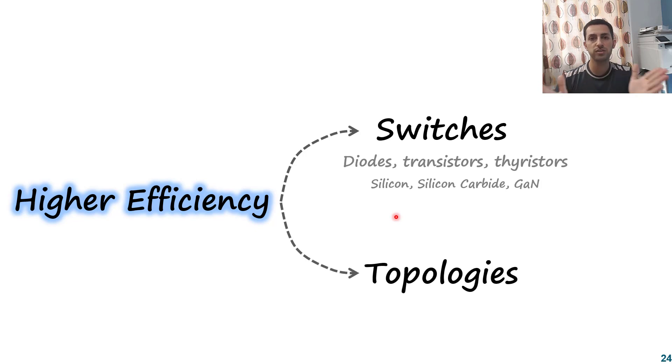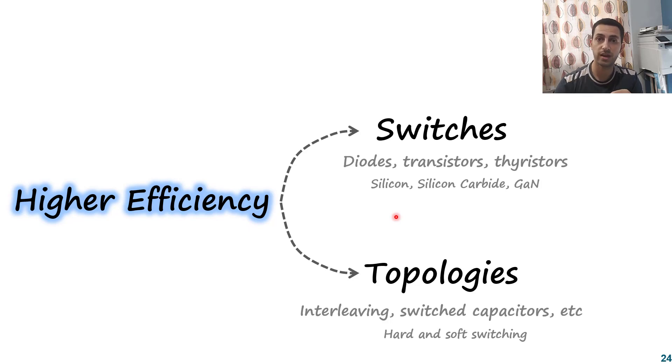The other route is to change the topology. So you keep the same switches. For example, you are using silicon carbide, and you will keep using the same silicon carbide. But you want to change the topology, different places, or number of switches to provide the higher efficiency target. That can be, for example, these are just four examples, by using interleaving topology, or switch capacitors topology, or any other topologies. And you should be also aware of what's called hard switching, or soft switching, that really makes a big jump for the efficiency recently.